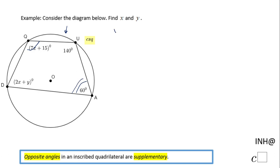That's my statement. I'm going to write here: the measure of angle Q plus the measure of angle A equals 180. So that means for us, replacing the expressions we have, that 7x plus 15 plus 60 equals 180.